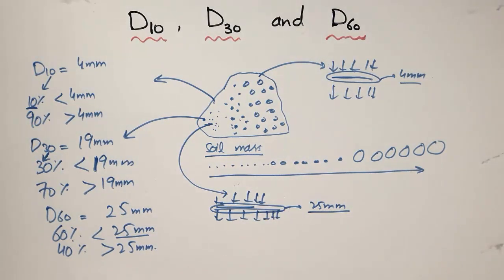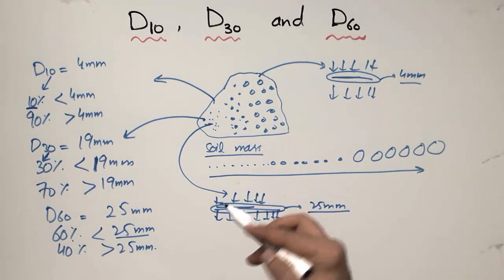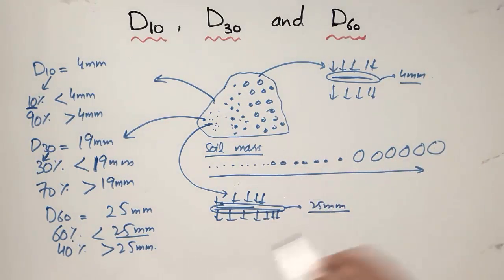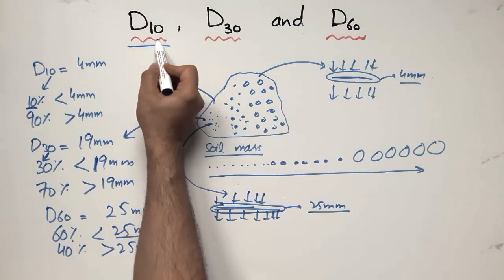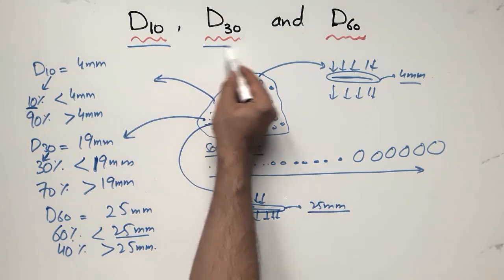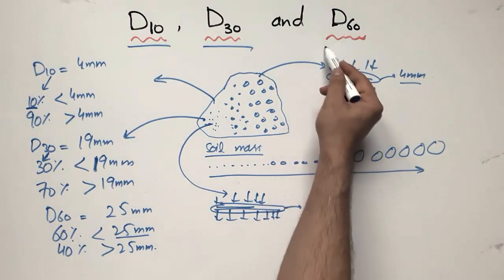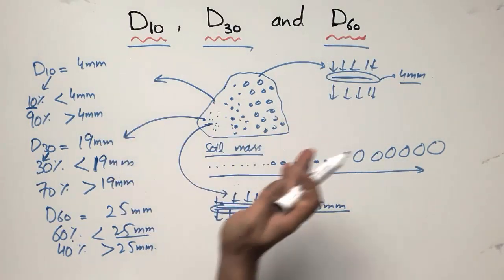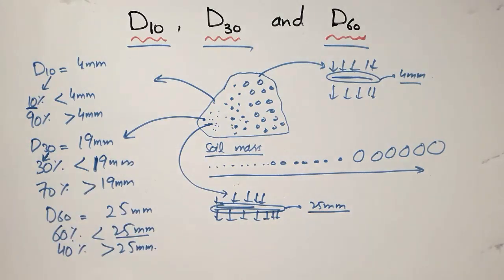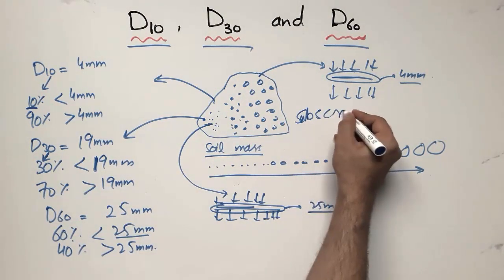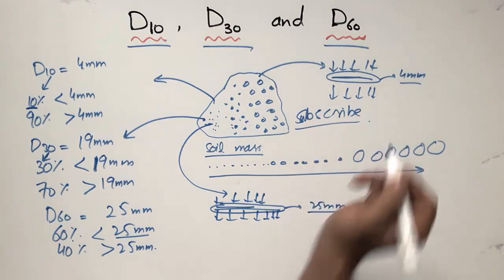These are very important parameters used to distinguish between different particle size distributions. D10 means 10 percent of soil particles are smaller than that size; D30 means 30 percent are smaller; and D60 means 60 percent are smaller. Don't forget to subscribe to the channel for daily 7 Engineering videos. Thank you for watching.